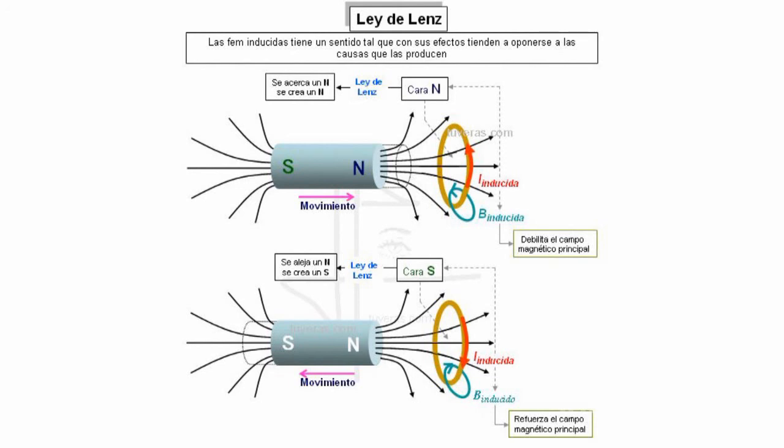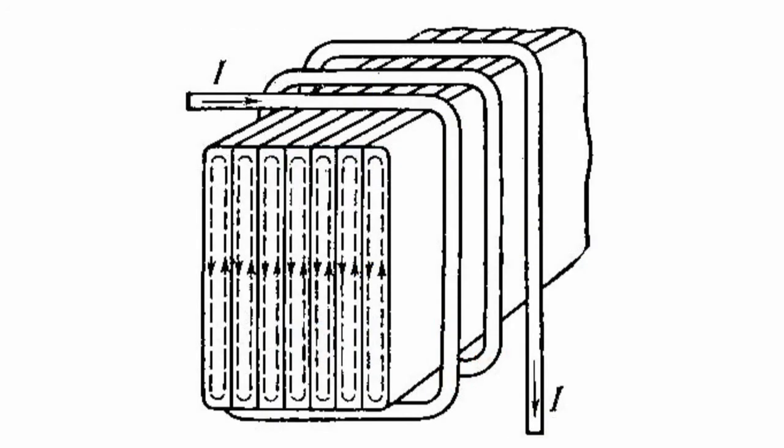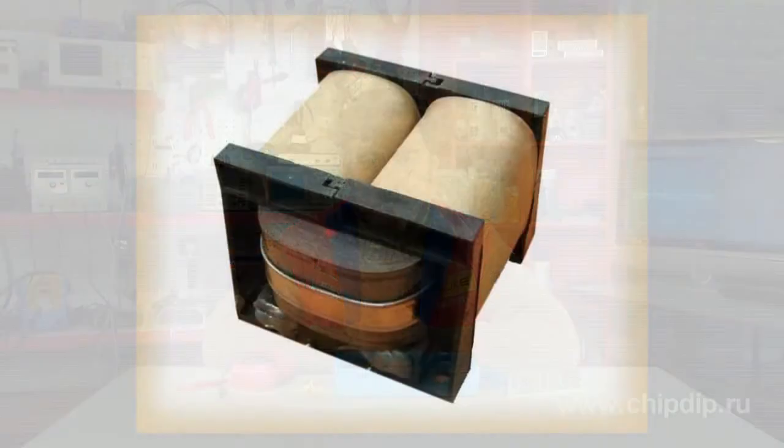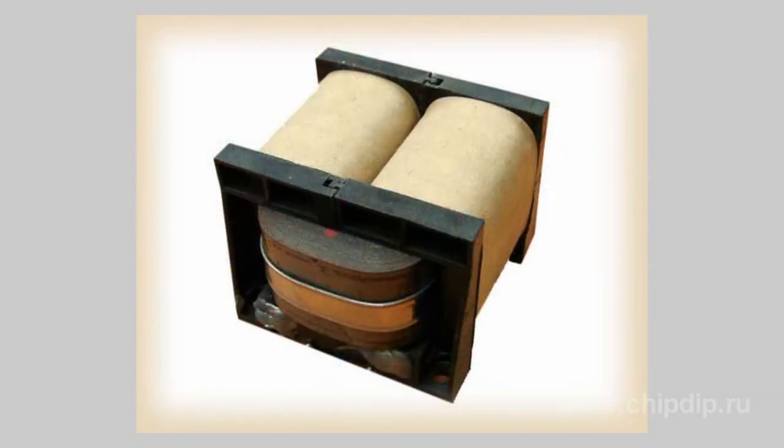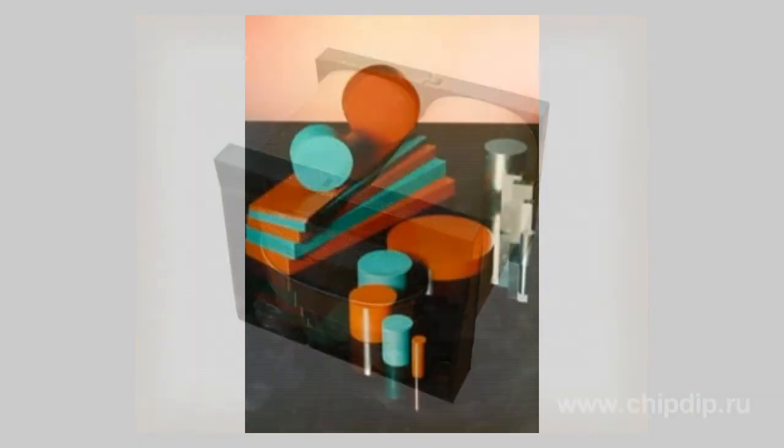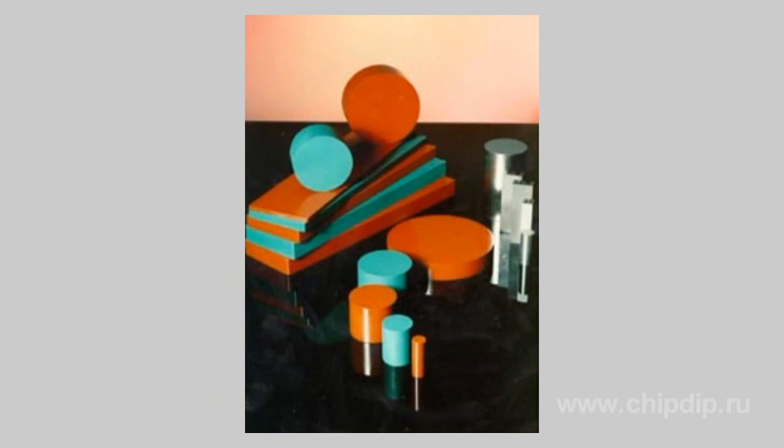In many cases, eddy currents are unwanted. There are special measures in place to eliminate such currents in order to prevent energy losses and unwanted heating. AC magnetic cores are made of thin ferromagnetic plates isolated from each other. Such a design, providing for isolated plates placed perpendicular to the direction of the eddy current, substantially reduces such eddy currents.